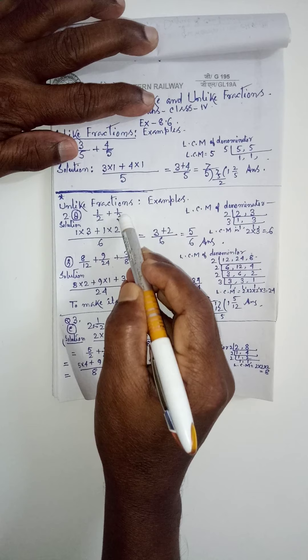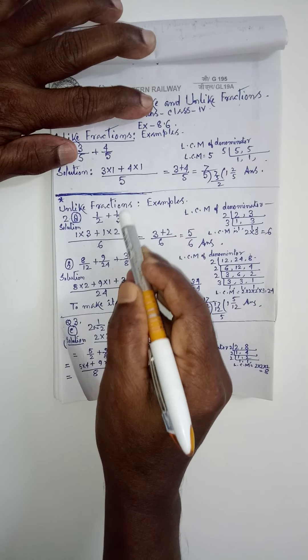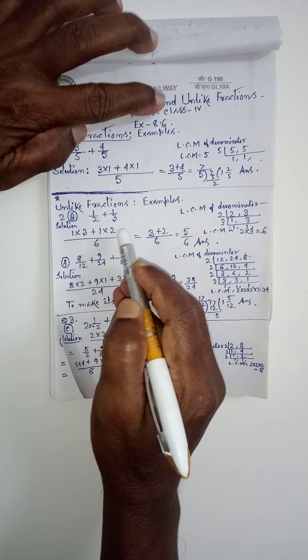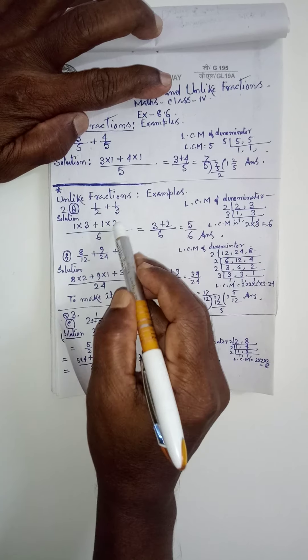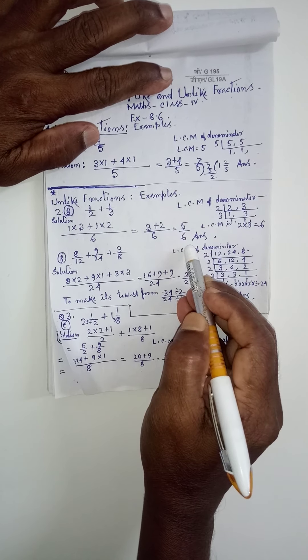Again, for this fraction, 6 divided by 3 means 2. 2 say, 1 ko divide karna hai, 1 into 2 means 2. 3, 1 jar 3, plus 2, 1 jar 2 means, 3 plus 2 means 5 by 6. Answer.